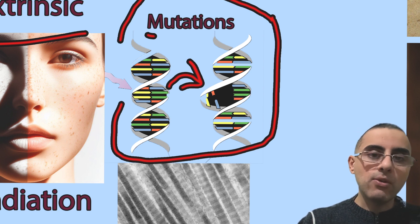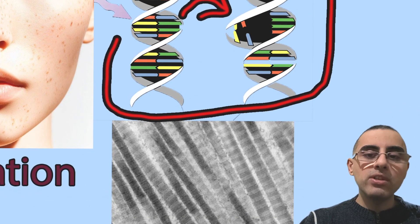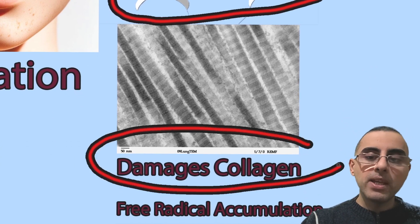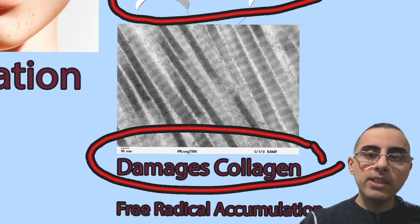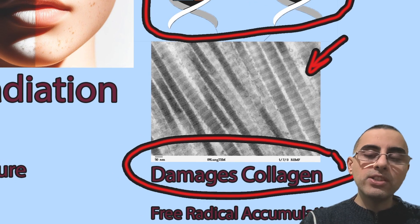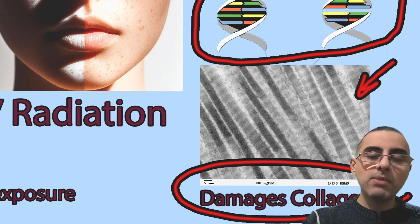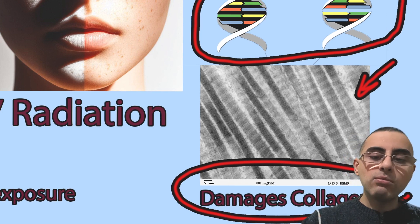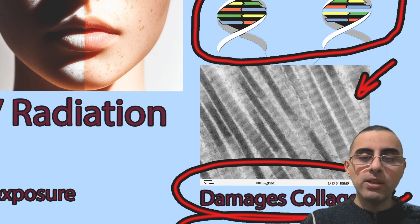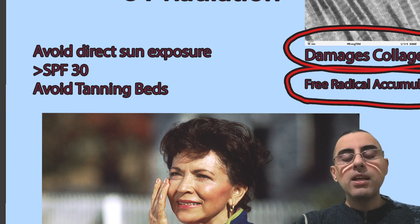These DNA mutations especially increase the risk of melanoma, which is a skin cancer. UV radiation also damages collagen — a protein in our body that makes our skin elastic. When collagen is damaged, skin loses elasticity and wrinkles occur. Another mechanism is the accumulation of free radicals in the cell, which causes cell damage and eventually cell death, contributing to skin aging.